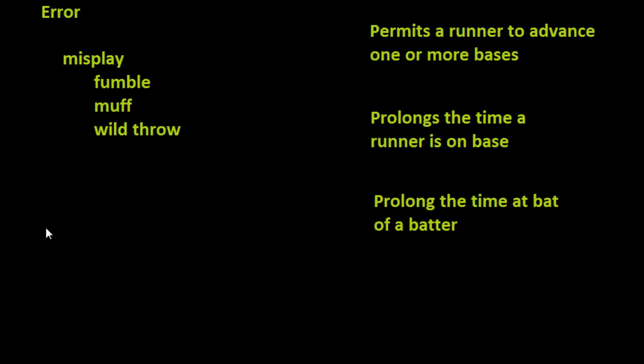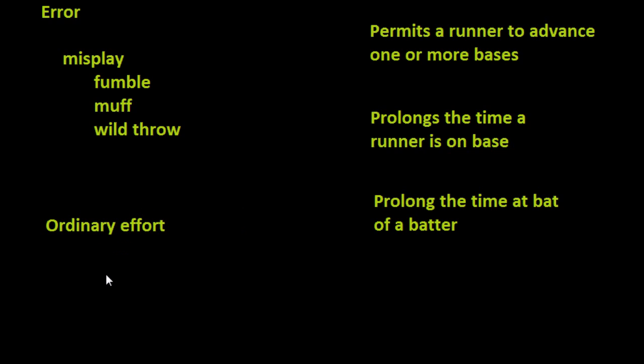So where do you draw the line between a base hit and an error? The rule book uses the term 'ordinary effort' as the boundary line. That's obviously a judgment call, and it's the decision of the official scorer sitting up in the press box to determine whether it's a hit or an error. That'll usually happen a couple of times a game where he'll have to make that determination.